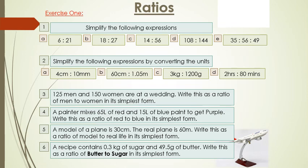You would need to convert 4 centimetres into millimetres. So we know that 1 centimetre is the same as 10 millimetres. So 4 centimetres would be 40 millimetres. And do the same with 60 centimetres converting the 1.05 metres into centimetres. And then the 3 kilogramme needs to be converted into grams. And the 2 hours needs to be converted into minutes. Remember 1 hour is equivalent to 60 minutes. So what would 2 hours be?